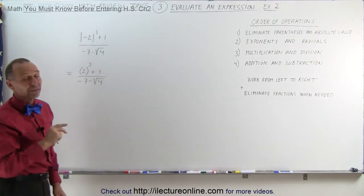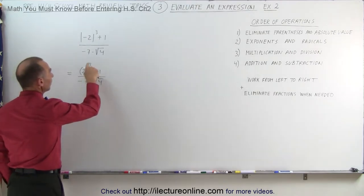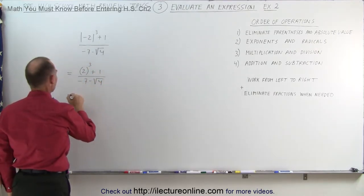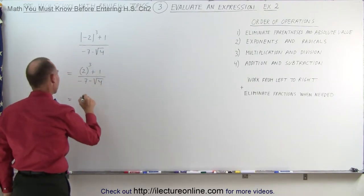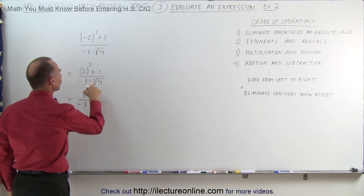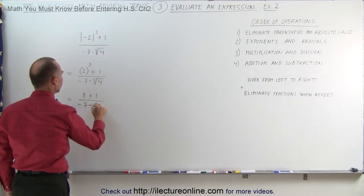Next, we want to get rid of exponents and radicals. We have an exponent in the numerator, we have a radical in the denominator. So this can be written as 2 cubed, which is 2 times 2 times 2, which is equal to 8, plus 1, divided by negative 7, minus the square root of 4, that's minus 2.